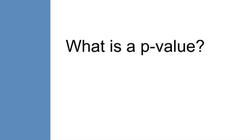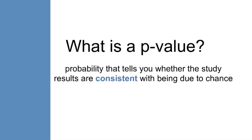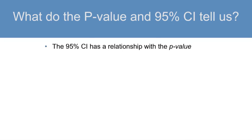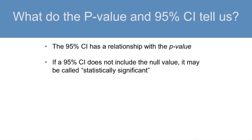So, what is a p-value? Study results are a combination of real effects and chance. The p-value is a probability that tells you whether the study results are consistent with being due to chance. The p-value does not tell you if the study result was due to chance. P-values alone do not let us directly say anything about the direction or size of a difference or measure of association between different groups. The 95% confidence interval has a relationship with the p-value.